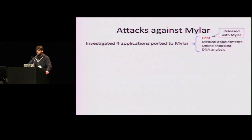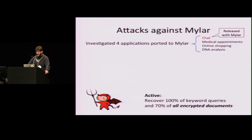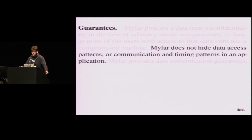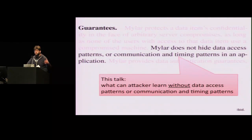To investigate these threat models, we looked at four applications — one released with the Mylar paper, and three we ported to use Mylar according to the paper's guidelines. In the threat model claimed by Mylar, we give an attack that in a simulated workload recovers 100% of the user's keyword queries and about 70% of all the keywords in the encrypted documents. We also give two weaker attacks. In this talk, I'm going to focus on the snapshot passive and active threat models, because our attacks in these models do not use data access patterns or communication or timing patterns.